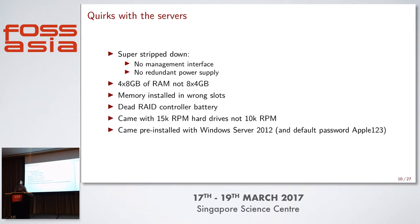They also removed the redundant power supply — Dell ships with two for redundancy, but they took one out and charge $30 for it. They said I'd get eight 4-gig sticks of RAM; I actually got four 8-gig sticks, which was an advantage, but the memory was installed in the wrong slots on half the servers so the dual-channel configuration was wrong and things weren't booting properly. One server had a dead RAID controller battery. The drives turned out to be 15K SAS instead of 10K. And my favorite quirk: they came pre-installed with Windows Server 2012 with the password 'apple123'.